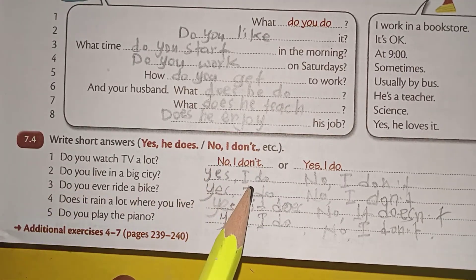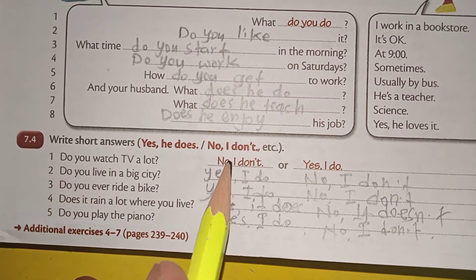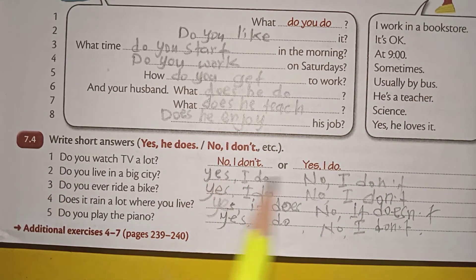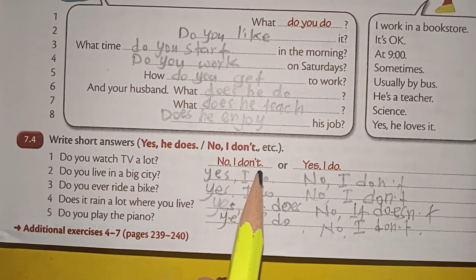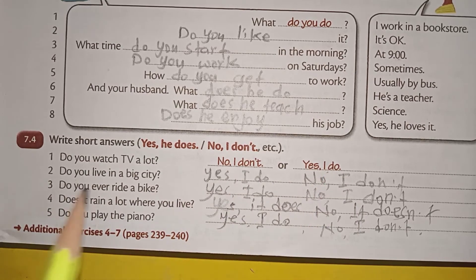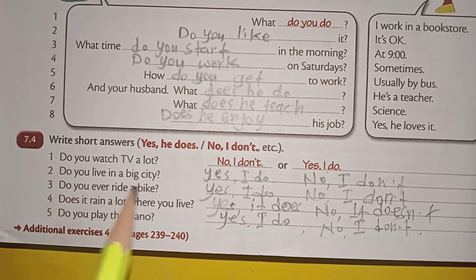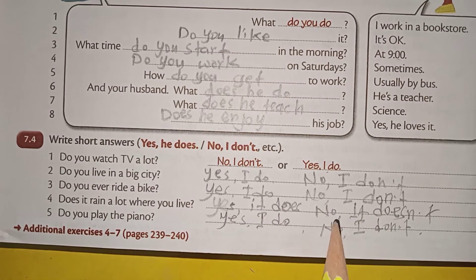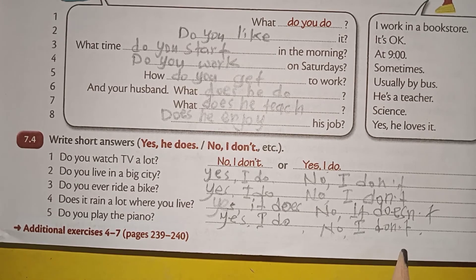Here we have very short answers in present simple tense, both negative and positive. Do you watch TV a lot? No I don't. Yes I do. Do you live in a big city? Yes I do. No I don't. Do you ever ride a bike? Yes I do. No I don't. Does it rain a lot where you live? Yes it does. No it doesn't. Do you play the piano? Yes I do. No I don't.